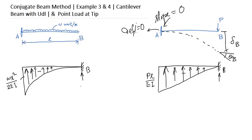So calculate theta B equals the area of this parabola: one-third, base is L, and height is WL squared by 2EI, so WL cubed by 6EI.